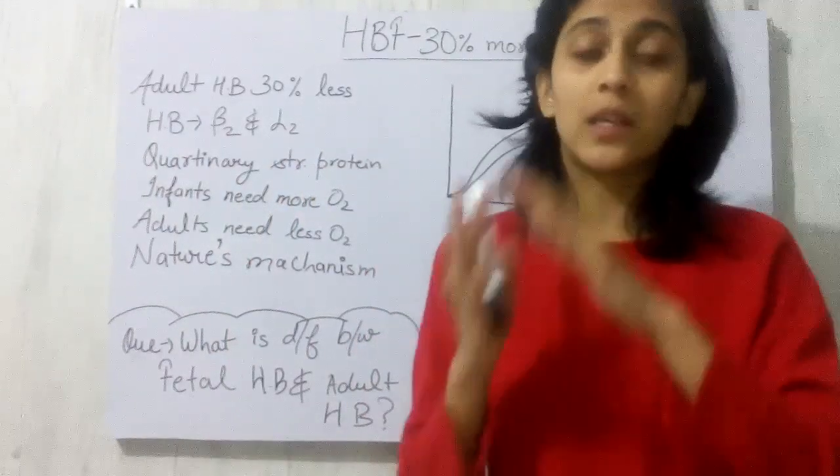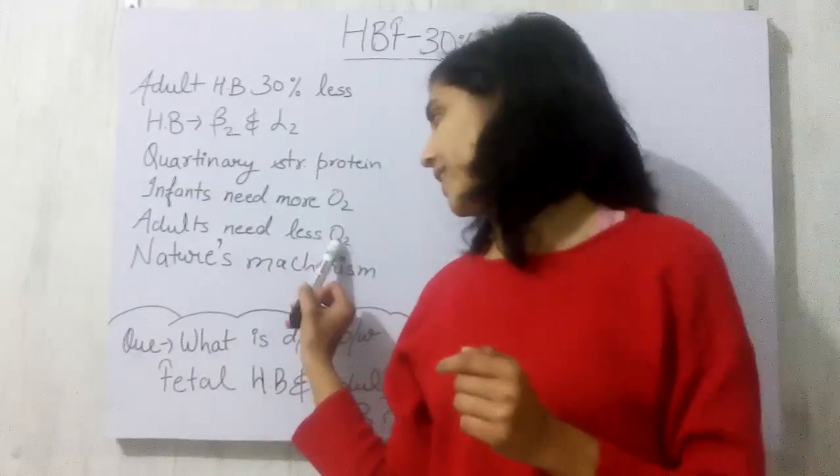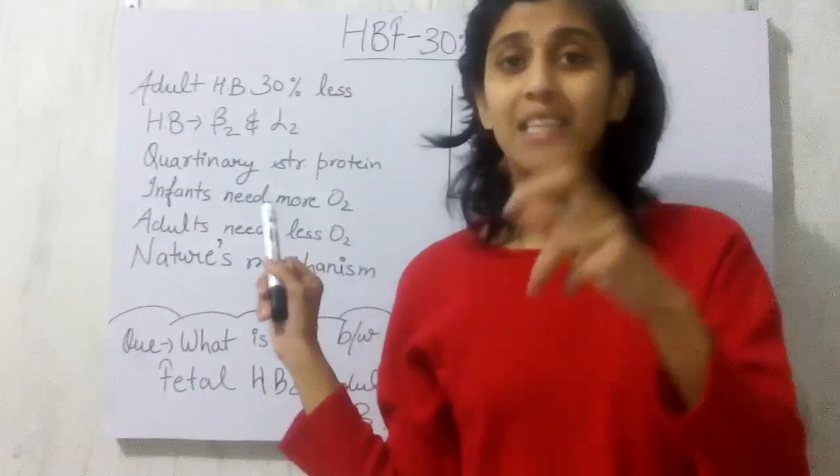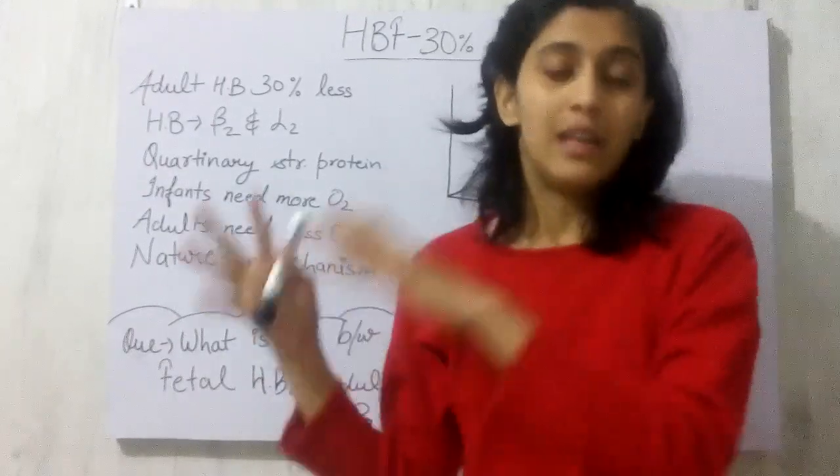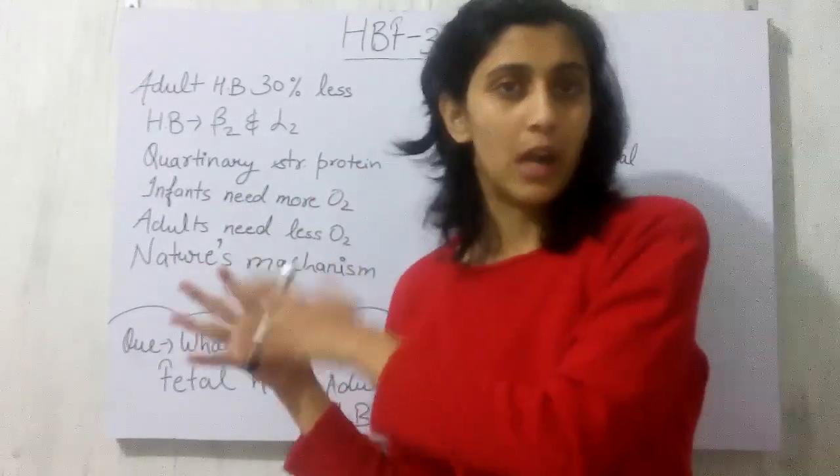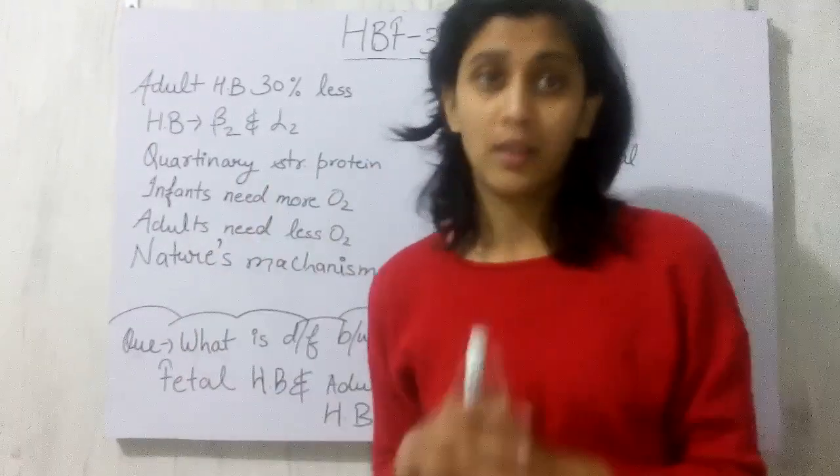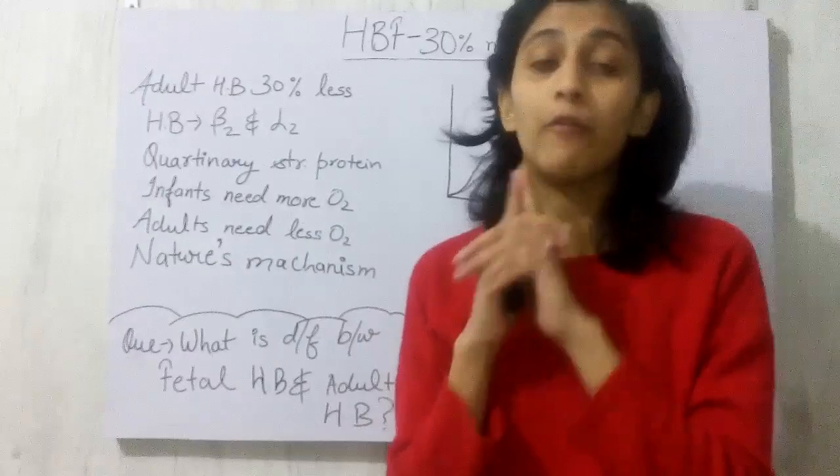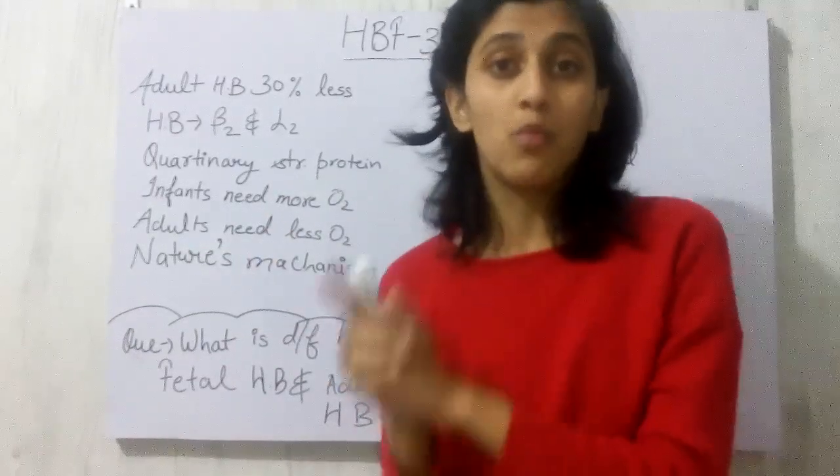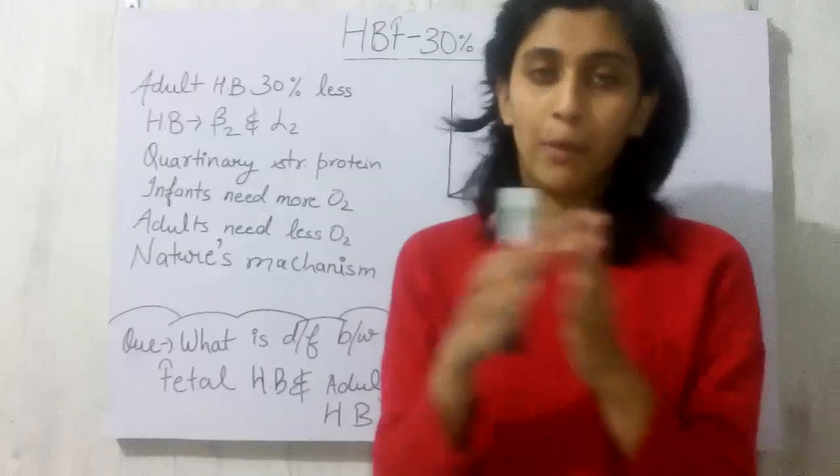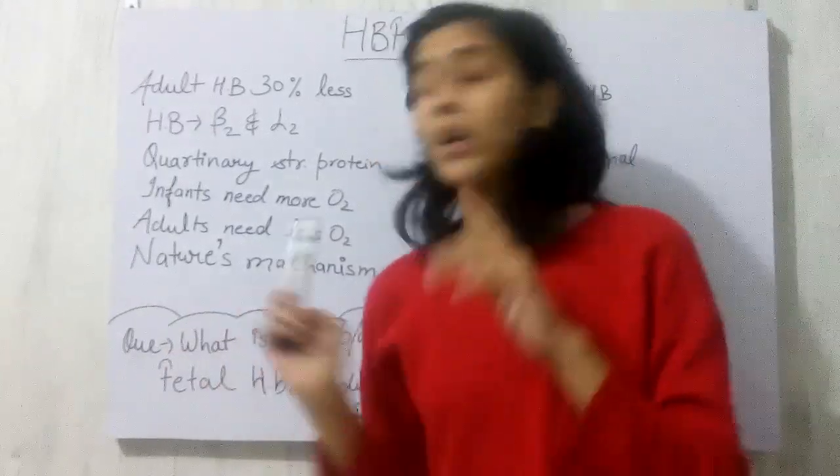Now why is this so? Because this is a well-proved fact that adults need 30 percent less O2, but infants need 30 percent more O2. Why do they need more O2 if we are talking about infants? Because infants have to go with some switchover mechanism, so they do need more oxygen compared to adults. This is nothing but nature's mechanism that the fetus HB is having 30 percent more oxygen because of all the needs to be fulfilled.